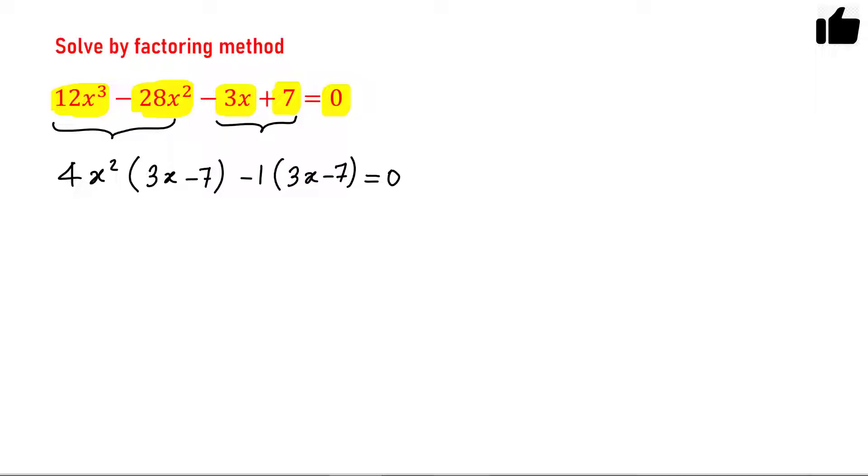Now this term 3x - 7 is here as well as here also, so I can take this as common. So 3x - 7 is a common term and then you will have 4x² - 1 and this equals 0.